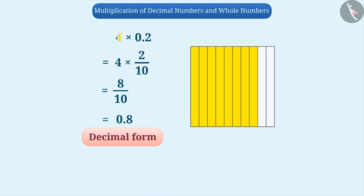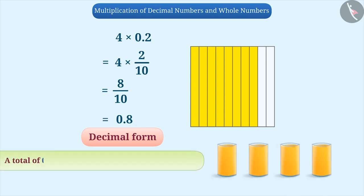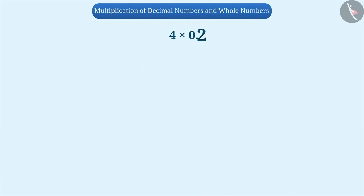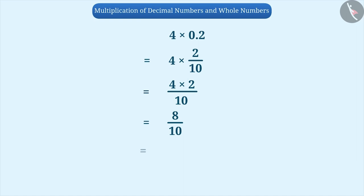We represent it in decimal form as 0.8. So, 4 multiplied by 0.2 is equal to 0.8, meaning a total of 0.8 liters of juice can be filled in 4 glasses. Multiplication of decimal numbers can also be performed by converting them into fractions. To find 4 multiplied by 0.2, we represent 0.2 as 2 by 10, then multiply the whole number 4 by the numerator 2 to get 8, and keep the denominator as 10, giving the answer 8 by 10, which is 0.8.